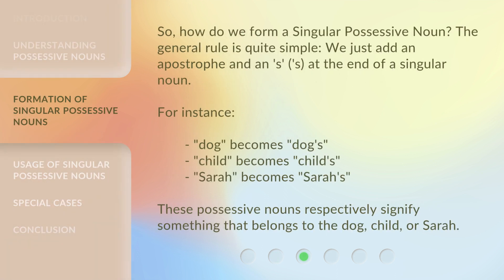So, how do we form a singular possessive noun? The general rule is quite simple — we just add an apostrophe and an S at the end of a singular noun. For instance, dog becomes dog's, child becomes child's, and Sarah becomes Sarah's. These possessive nouns respectively signify something that belongs to the dog, child, or Sarah.